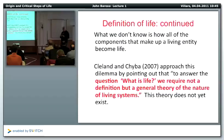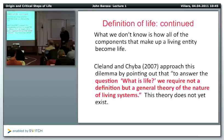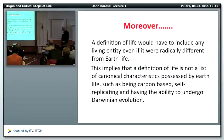Cleland and Chiba in 2007 approached this dilemma by pointing out that to answer the question 'what is life,' we require not a definition but a general theory of the nature of living systems. This theory does not yet exist. Moreover, a definition of life would have to include any living entity, even if it were radically different from Earth life, and we don't know how to think about something living that goes beyond what we actually know on Earth.